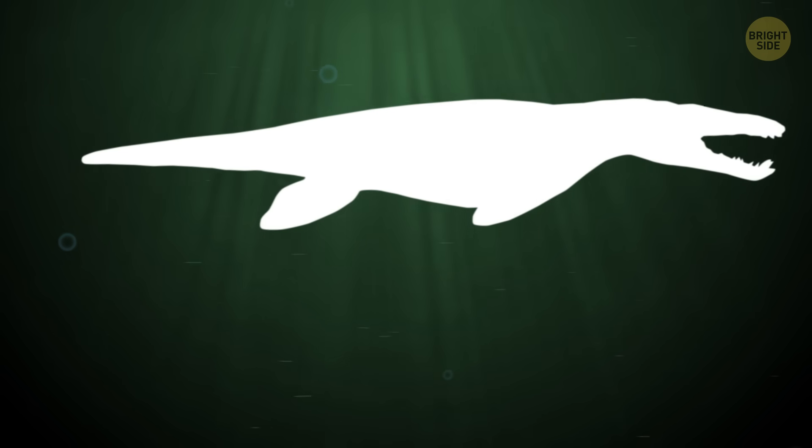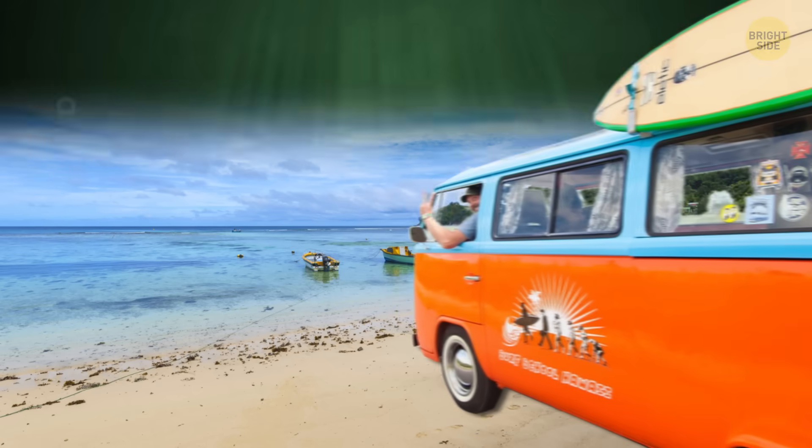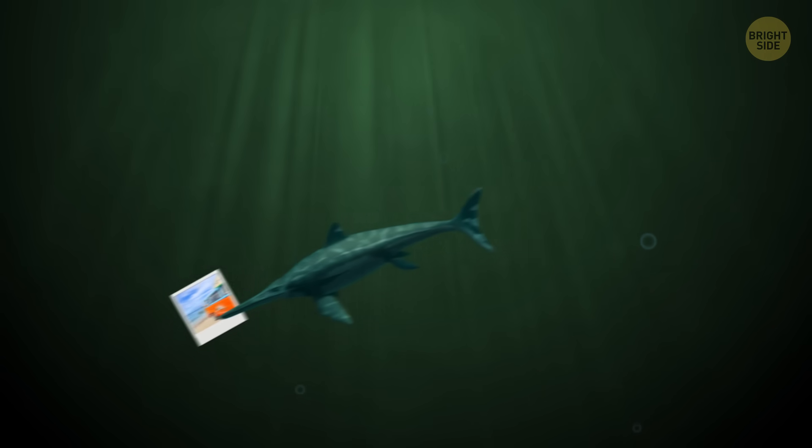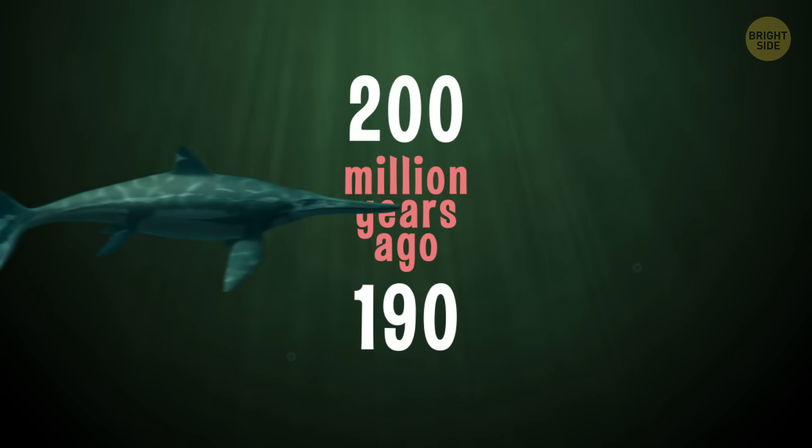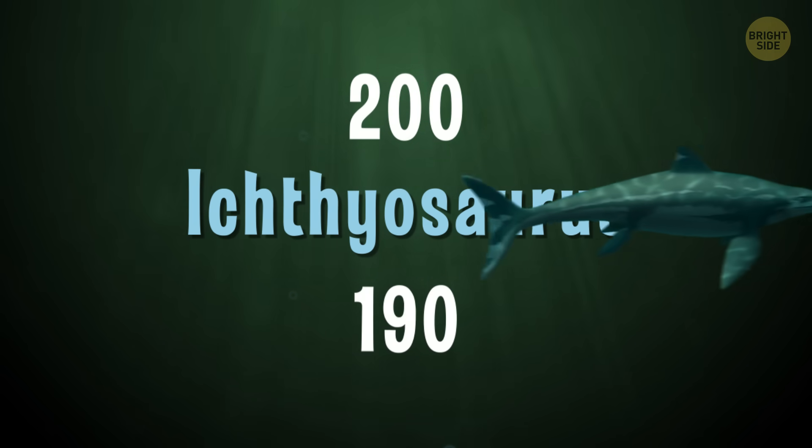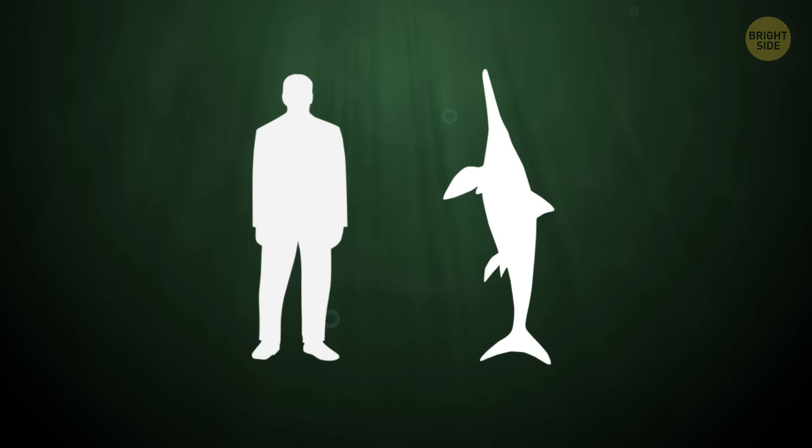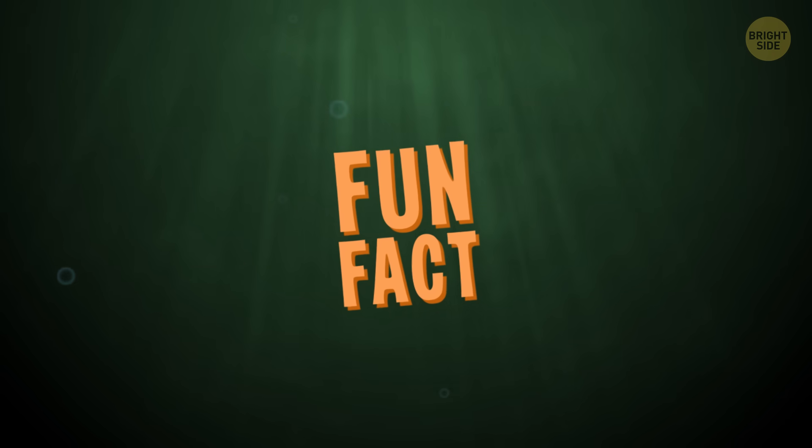Glad I don't have to worry about these things on my next summer vacation at the beach. One of the smaller prehistoric marine reptiles also lived during the Jurassic period around 200-190 million years ago, Ichthyosaurus. These guys only grew to about 6 feet, which would have put them at the same height as a guy who was slightly taller than average today. Fun fact about these guys?